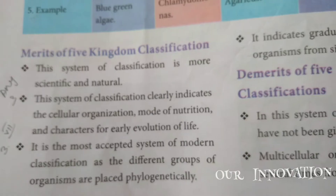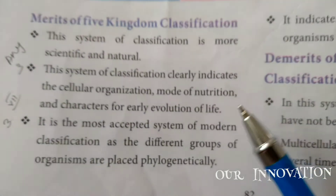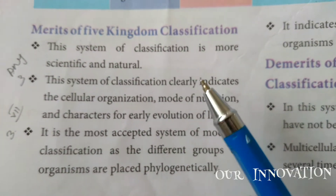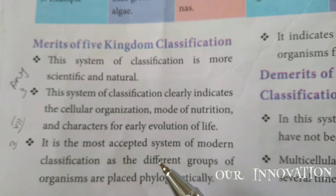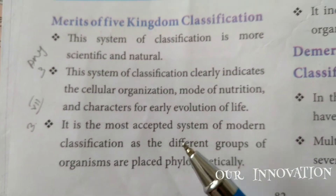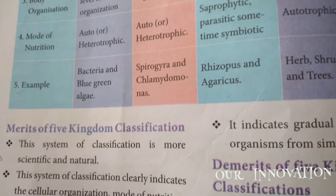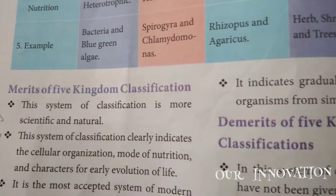Write any two merits of the five kingdom classification. Page number 82. They have given the merits of kingdom classification. Read through and write any two merits as your answer.